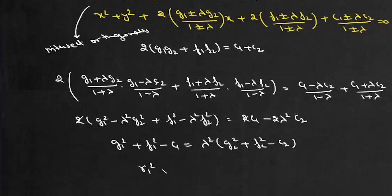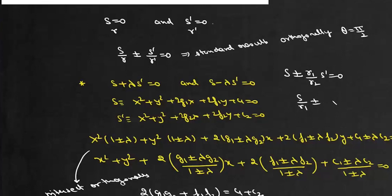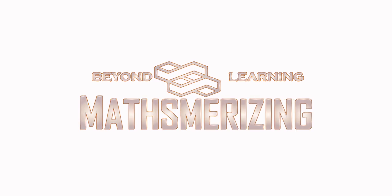Now G₁² + F₁² - C₁ is R₁² and G₂² + F₂² - C₂ is R₂², so λ = ±R₁/R₂. Therefore these two circles are orthogonal if S ± (R₁/R₂)S' = 0, which rearranges to S/R₁ ± S'/R₂ = 0. This confirms that the given circles intersect orthogonally, with angle of intersection equal to π/2.